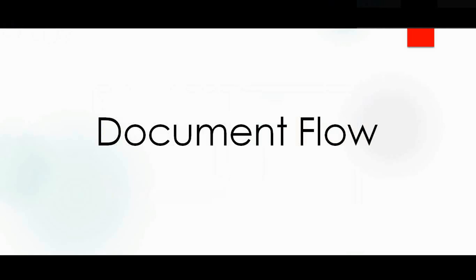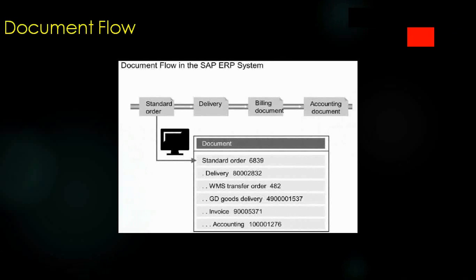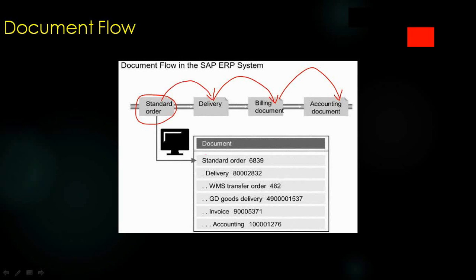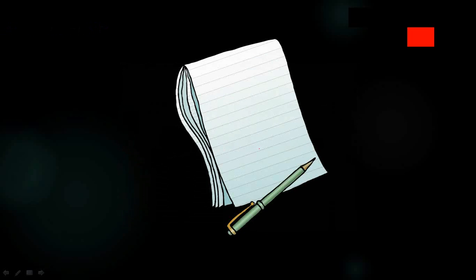All these activities can be seen in one screen in SAP, known as document flow. I'll show this practically in the next video. Document flow means that from a sales order we create a delivery, from the delivery we create a billing document, and from billing an accounting document is generated in finance. You can see the entire chain — sales order, delivery document, transfer order, goods posting, invoice, and accounting document — all in one screen.